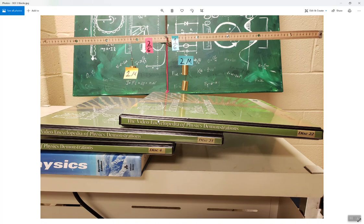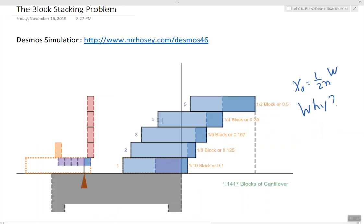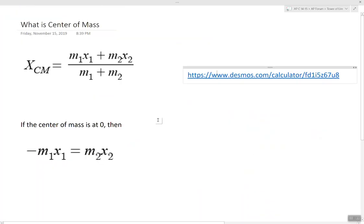So you probably know this, but center of mass is a weighted average of the masses. It's the average center of mass position. It's mass 1 times position 1 plus mass 2 times position 2 divided by the mass of the system.